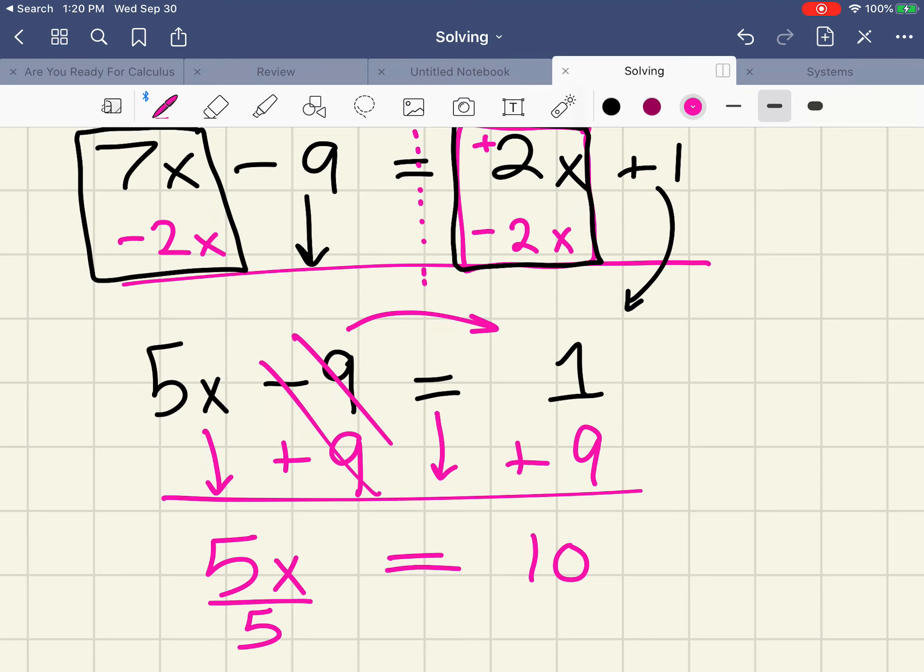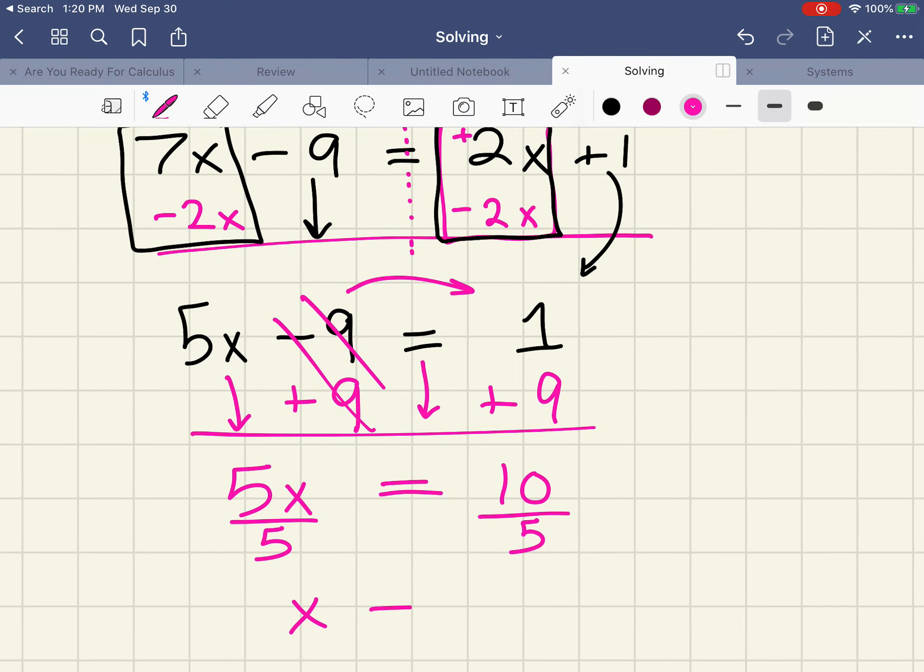When I divide by 5, I get x equals 2. Make sure that you drop your equal sign down. If you divide this side by 5, you divide that side by 5 to get your answer, x equals 2.